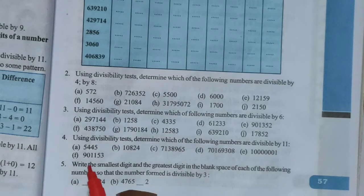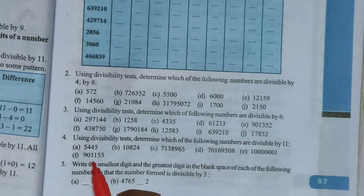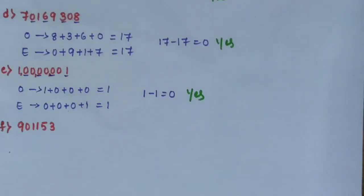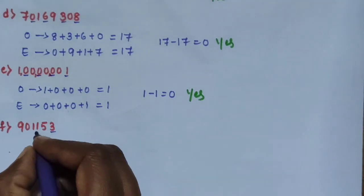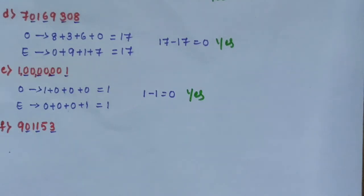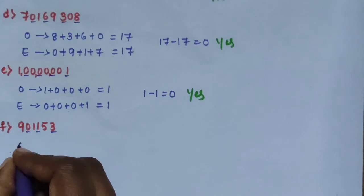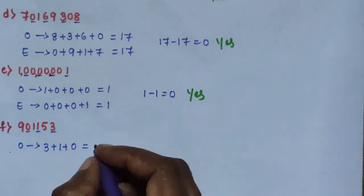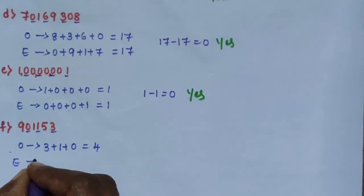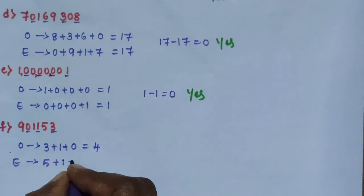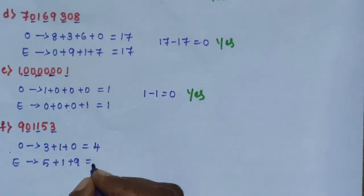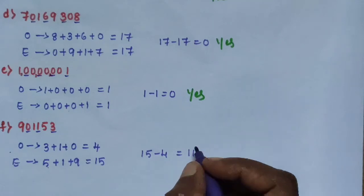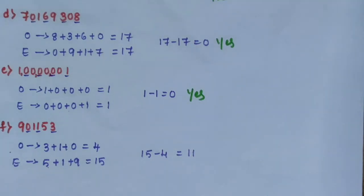Sub question F: 9,153 (with blank). Sum of digits at odd places from the right: 3 plus 1 plus 0 equals 4. Sum of digits at even places: 5 plus 1 plus 9 equals 15. Difference: 15 minus 4 equals 11. Therefore, divisible by 11 is yes.